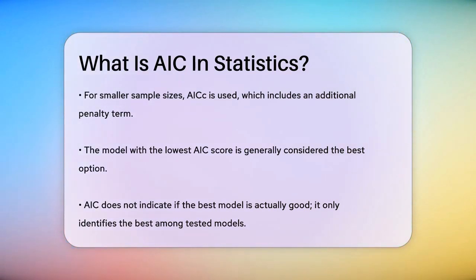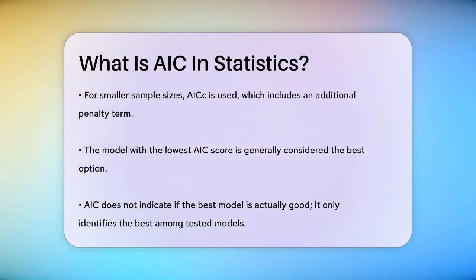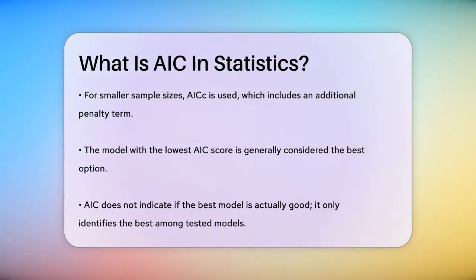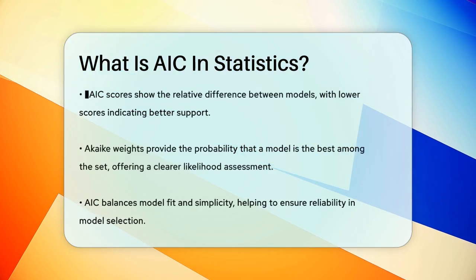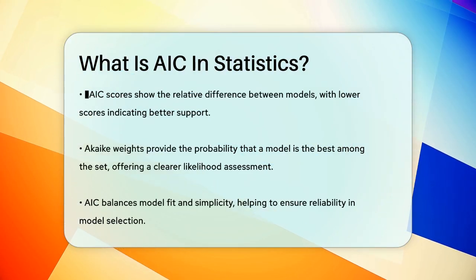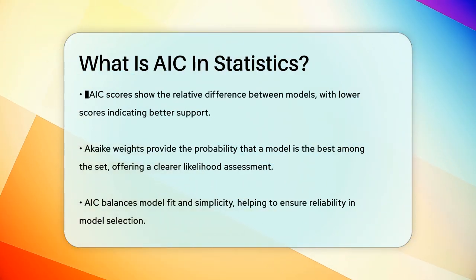To make things easier, you can also look at delta AIC scores, which show the relative difference between the best model and the others. For example, if a model has a delta AIC score of less than 2, it's considered to have substantial support. If it's between 3 and 7, it has less support. And if it's over 10, the model is unlikely to be the best.